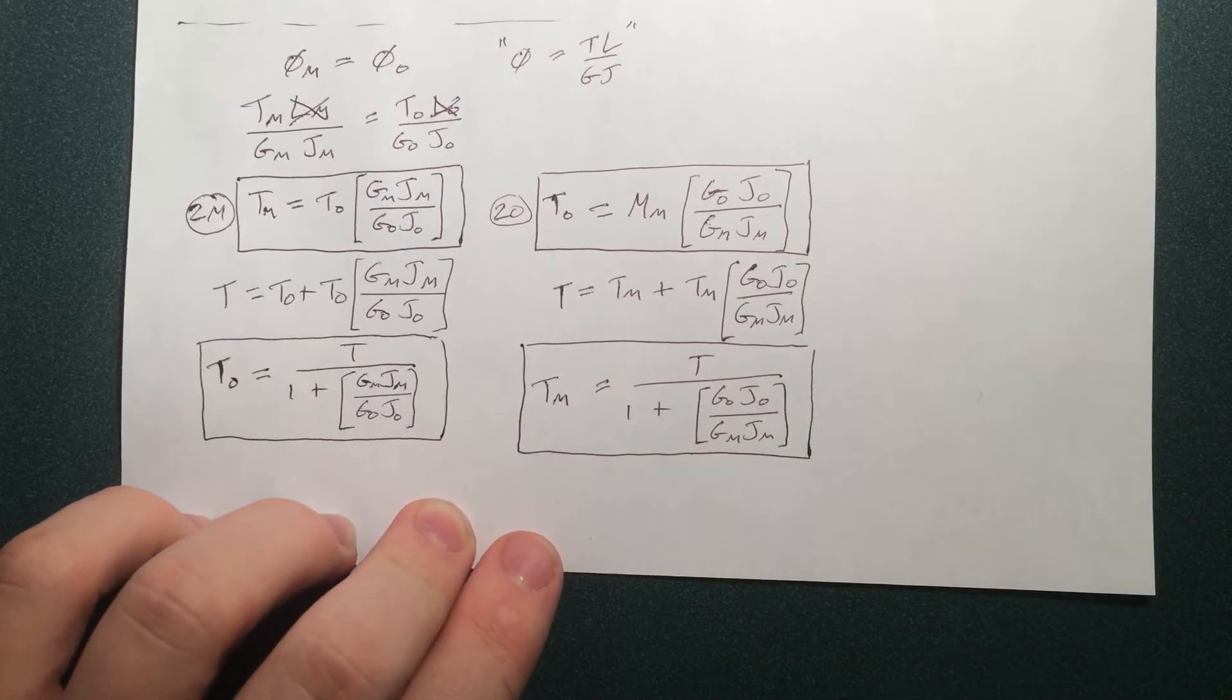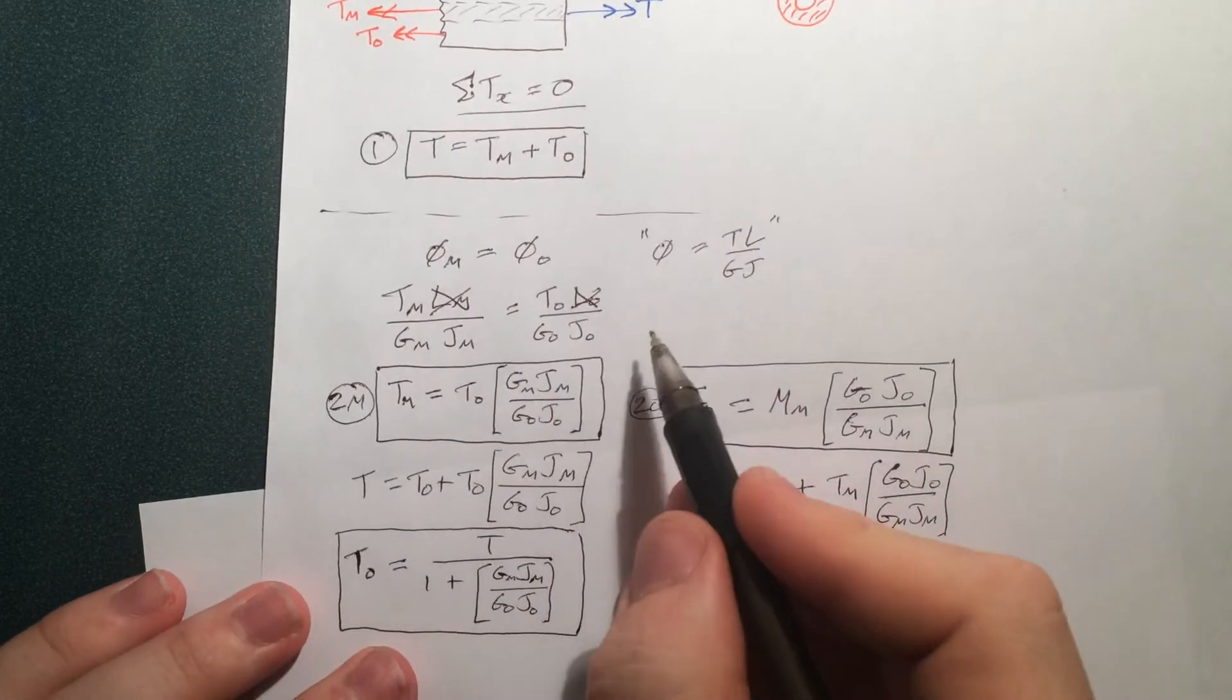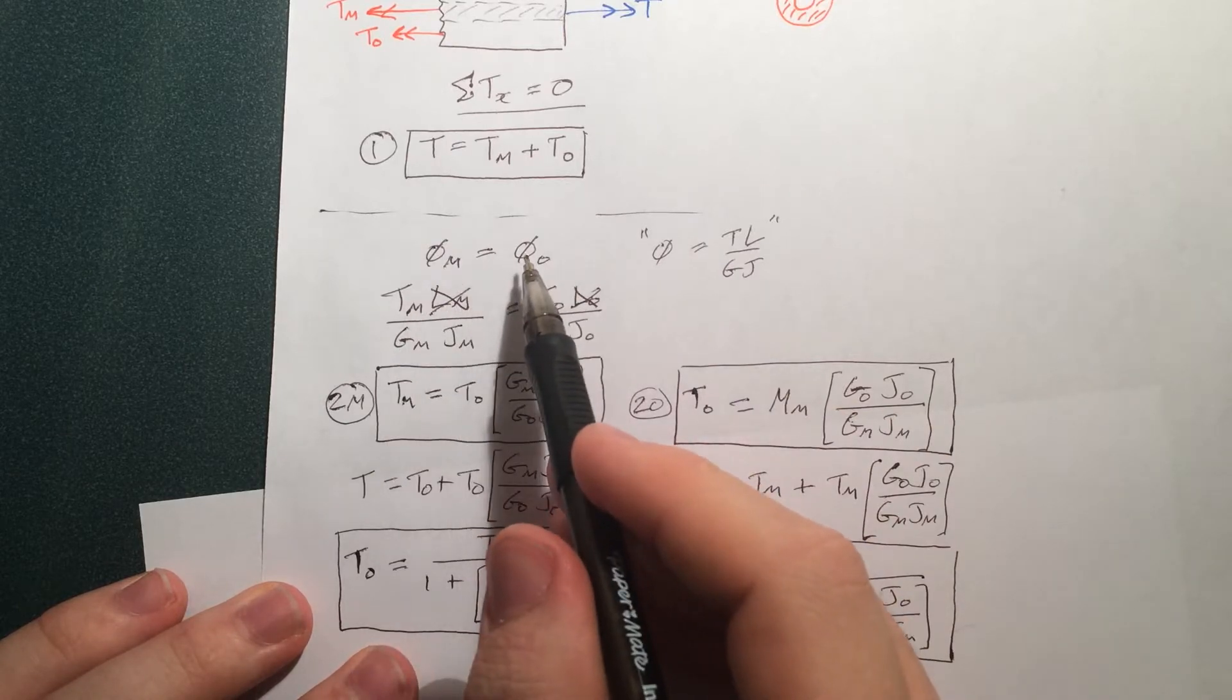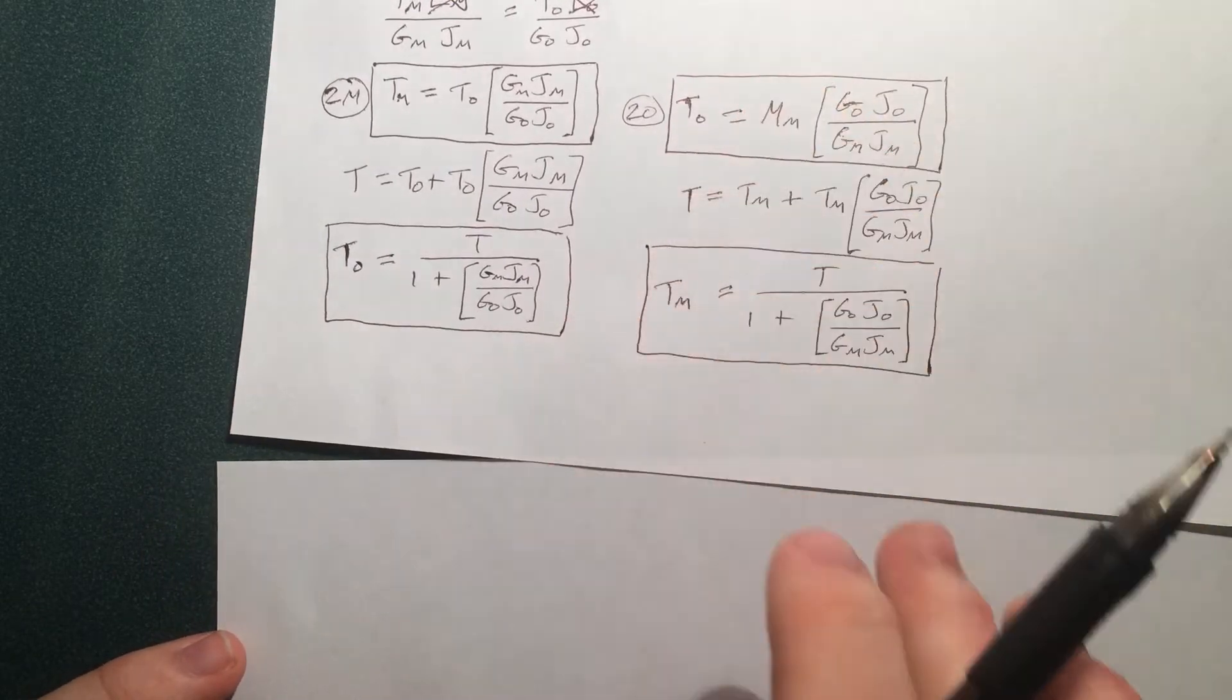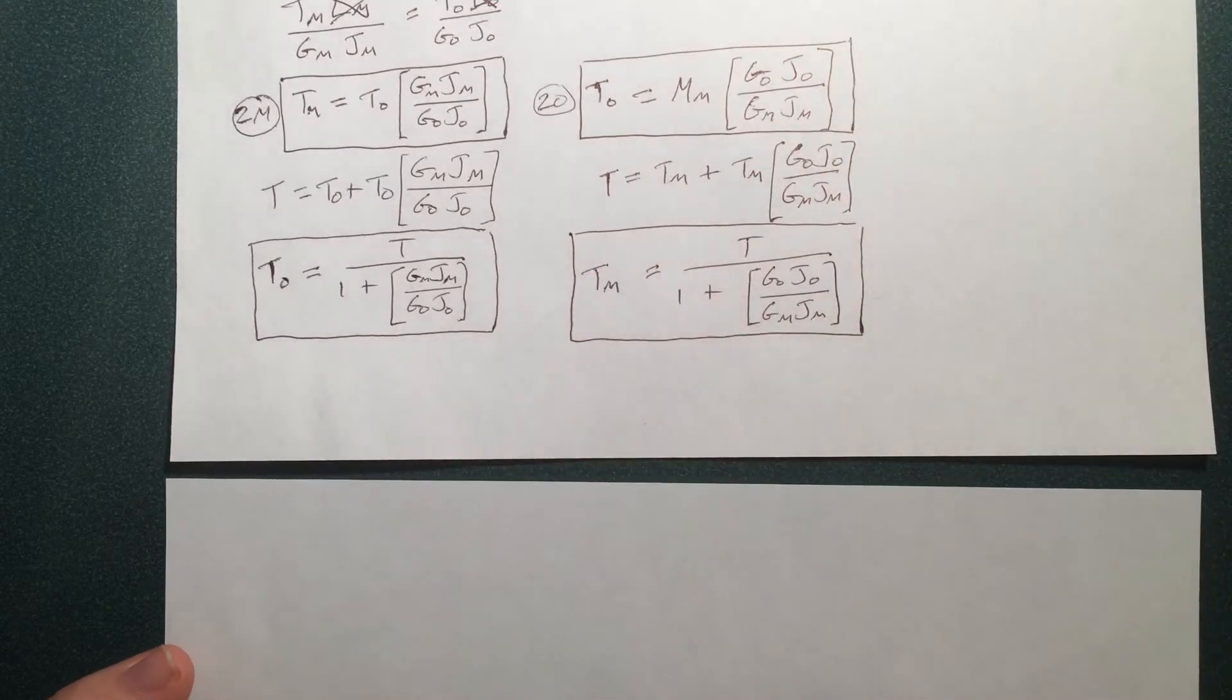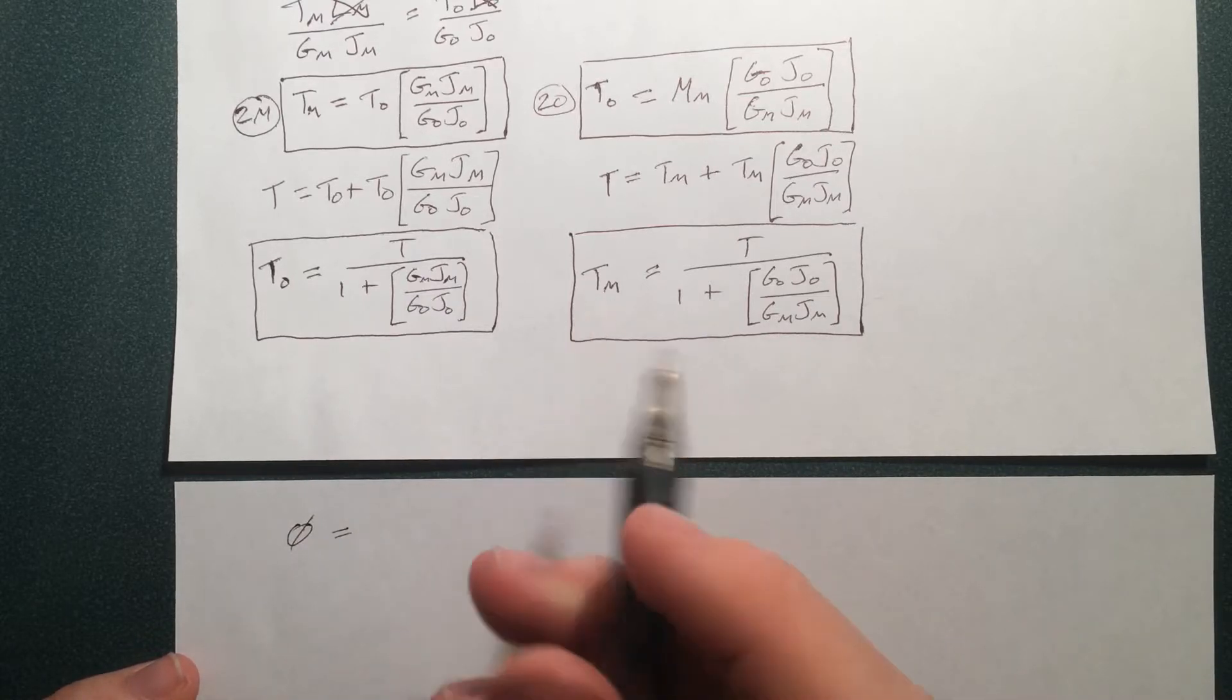So let's keep on going and go ahead and solve for the overall displacement. Now, we know displacement, or twist, is equal to this. And the two twists equal each other. So we can really find the overall twist just by looking at any one of these twists. In my case, I'll just pick the twist in the middle piece. But in reality, it's the twist of the outside piece and it's all the same. So we'll just call it phi, because it doesn't matter which piece you take.